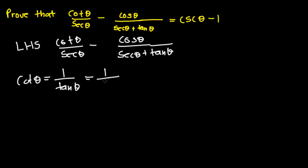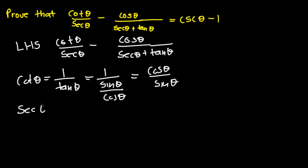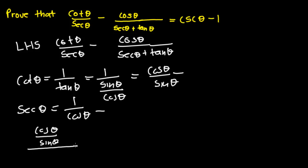Tan theta can also be written as sine theta over cos theta, so cot theta can be rewritten as cos theta over sine theta. We also know from trig identities that sec theta is equal to 1 over cos theta. Substituting these into the expression: cot theta becomes cos theta over sine theta, all over 1 over cos theta minus cos theta.